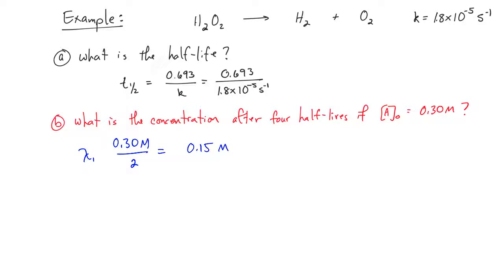And then dividing it by two again. After two half-lives, it's going to be 0.15 divided by two again, so it's going to be 0.075 and so on.